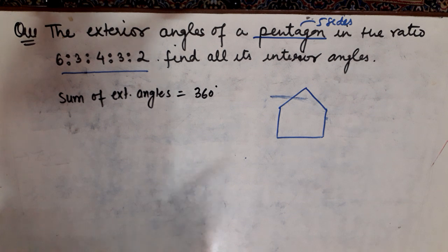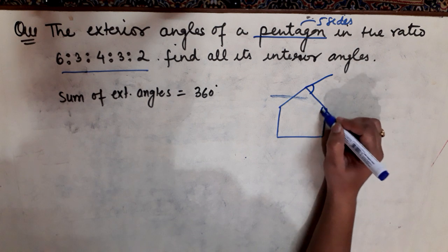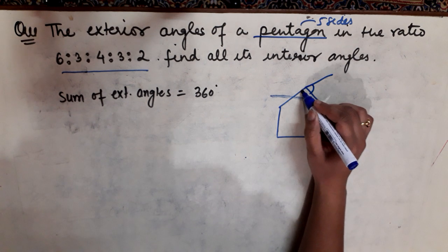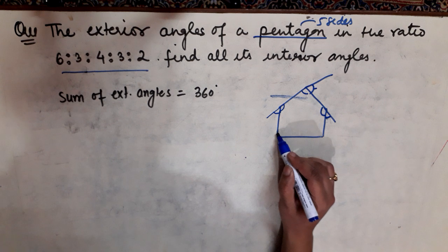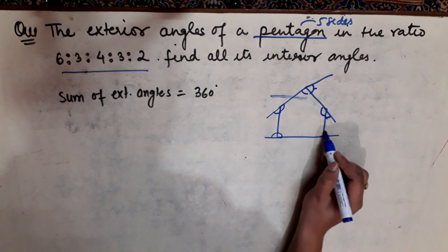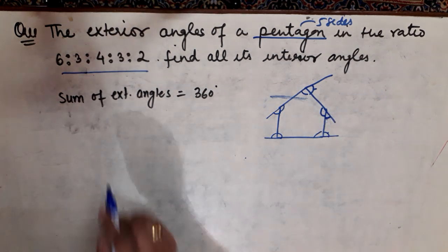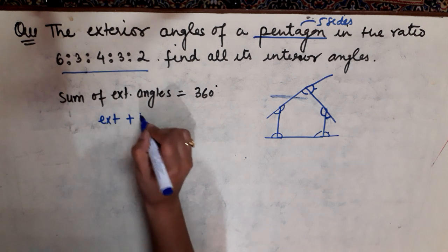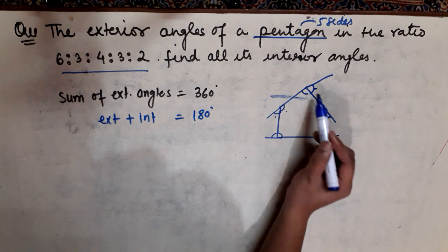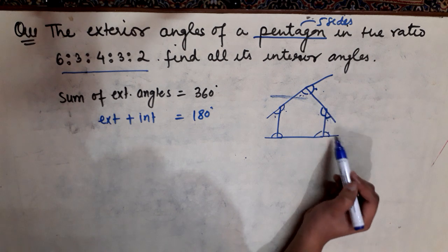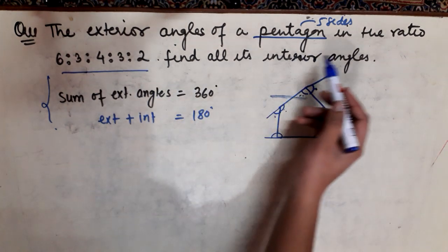Exterior angles are the angles outside the shape. For each vertex, if one is interior then the adjacent one outside is exterior. Also remember: exterior angle plus interior angle always equals 180 degrees. So if you know the exterior angle, you can find the interior angle.